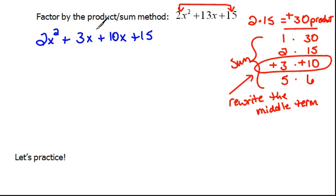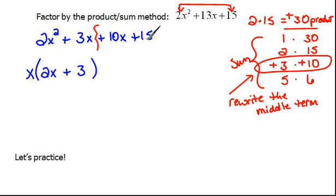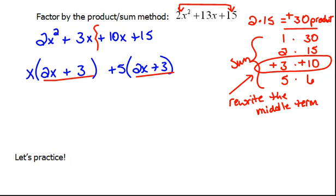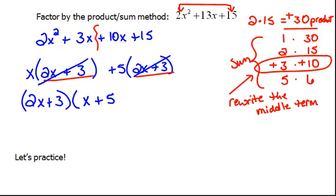Now we have 4 terms, and we will factor by grouping, which is what we already know how to do. Looking at the first 2 terms, we can pull an x out. An x times 2x will give us 2x squared, and an x times a positive 3 will give us 3x. In the last 2 terms, we have a positive 5 in common. So 5 times 2x would give us 10x, and 5 times a positive 3 would give us 15. We need these to be exactly the same so that we can factor that common binomial out, and when we do that, we're left with x plus 5 as the other factor.